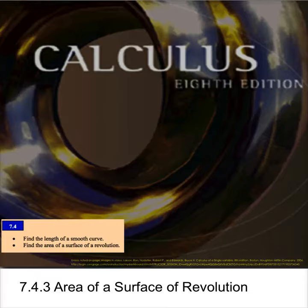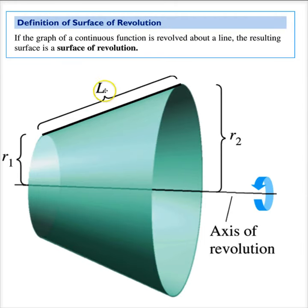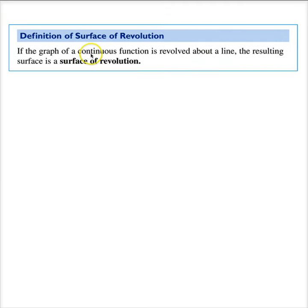Sometimes you have a curve and you rotate it around a line, and you want to know what is the surface area of that surface of revolution. Suppose you're painting some sort of sculpture—if we have a continuous function revolved around a line, this gives us a surface of revolution.